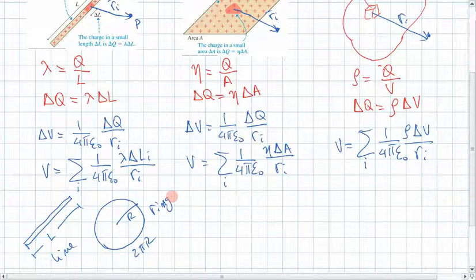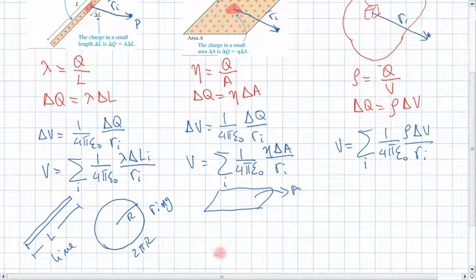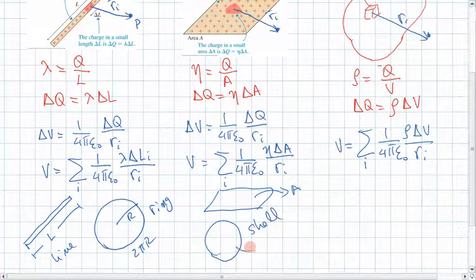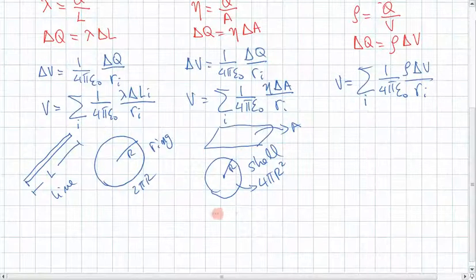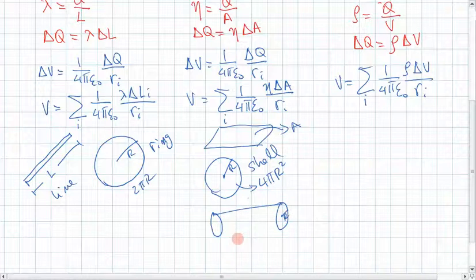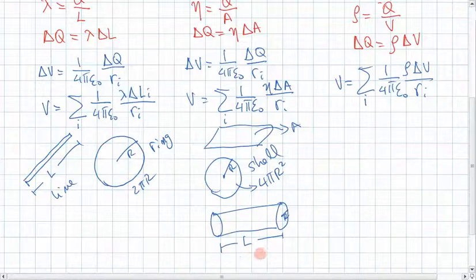For surface distributions, we would have planes of area A. We could have a spherical shell, which has an area of 4 pi r squared. Or we could also have a cylinder with radius r and length l, and the area of this cylinder would be 2 pi r times l.